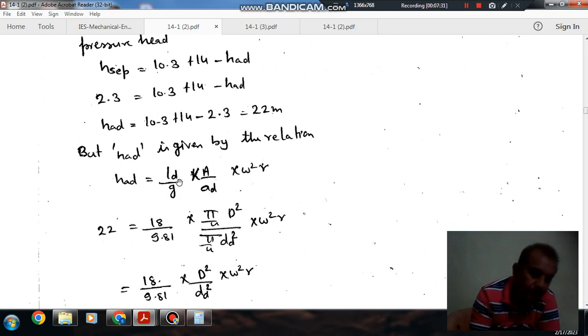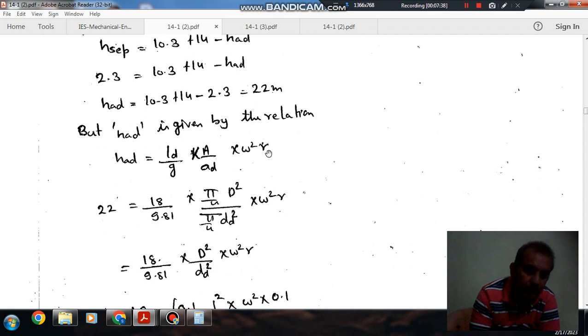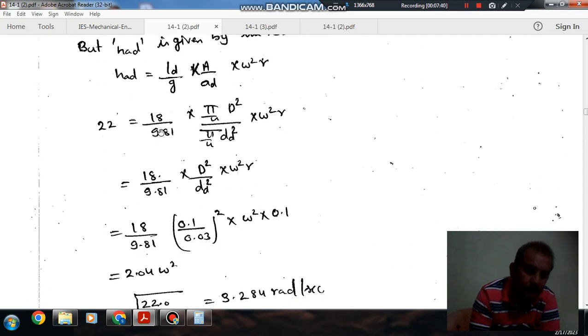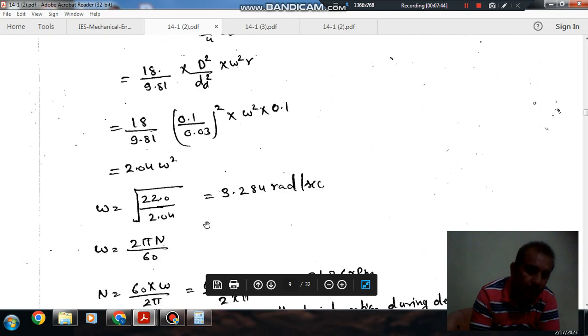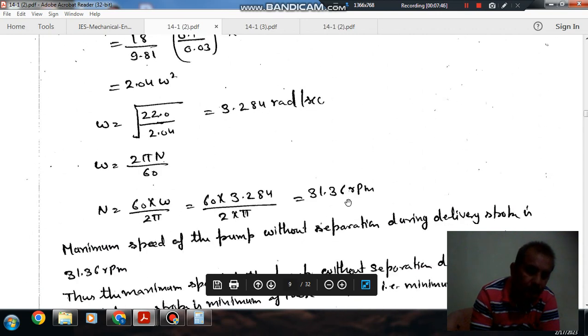L is length of delivery pipe, AD is area of delivery pipe, and R is 0.1. You can find omega. Omega comes out as 31.36 RPM.